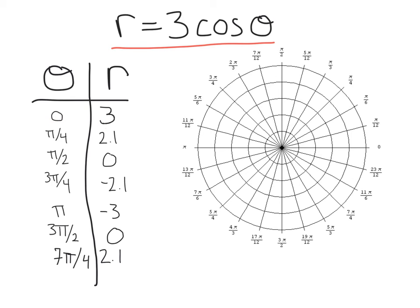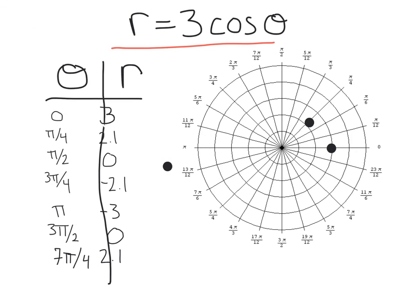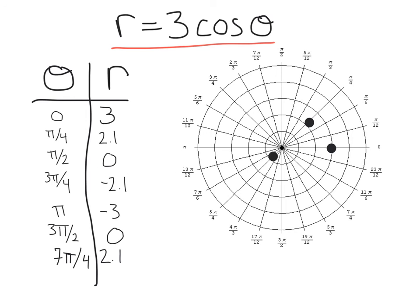Now we can plot points. First we've got (0, 3) — there we are. Then we've got (π/4, 2.1): that's π/4, out to about 2.1, somewhere around there. Next we've got (π/2, 0): that's π/2 right at 0, so that's just going to be at the origin. Next, we've got (3π/4, negative 2.1): that's 3π/4 right here, and negative 2.1 is going to be in the opposite direction, right about there.